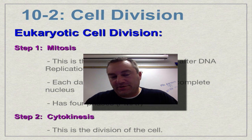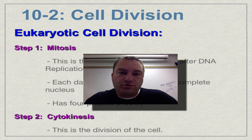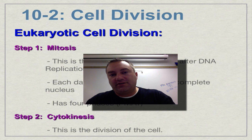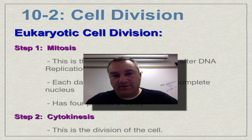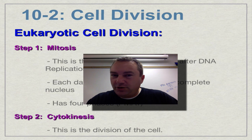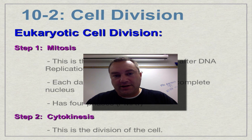Welcome to episode 3, which is going to be the longest of the 10 in this series. It covers a very important structure when it comes to cell division — chromosomes. Chromosomes are little coiled-up packets of DNA that are easier for the cell to move around during the division process. We're going to go over chromosome structure and spend a little over 10 minutes on this episode.